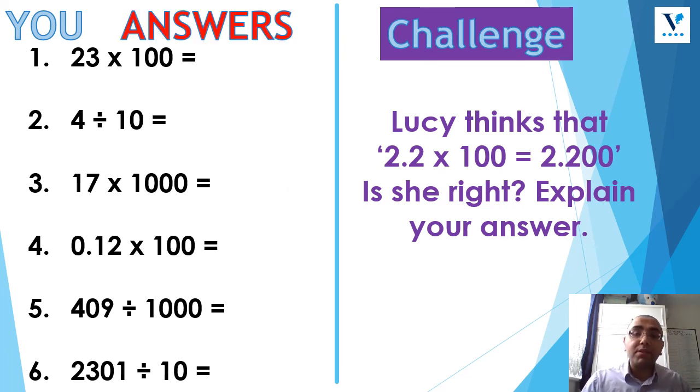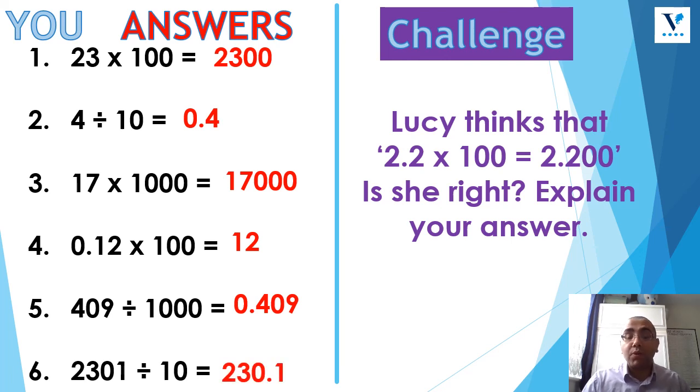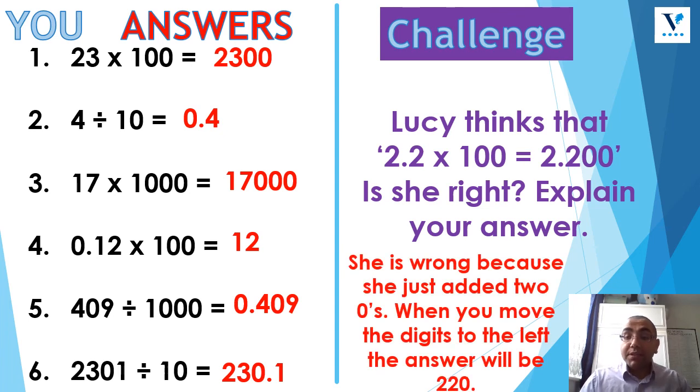Now let's go through the answers. So 23 times 100 is 2,300. 4 divided by 10 is 0.4. 17 times 1,000 is 17,000. 0.12 times 100 is 12. 409 divided by 1,000 is 0.409 and 2301 divided by 10 is 230.1. And for the challenge question, Lucy, she is wrong because she just added two zeros. When you move the digits to the left, the answer will be 220. So 2.2 times 100 is 220. Make sure that you give yourself a tick or a cross and any questions that you got wrong, just have another go at them again. I hope that you've enjoyed this video and I look forward to seeing you again very soon.